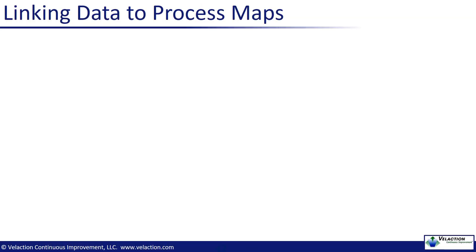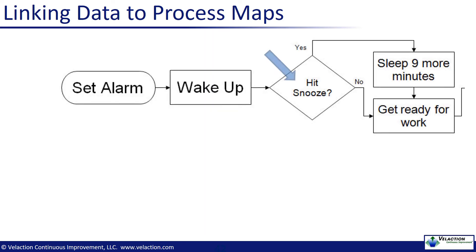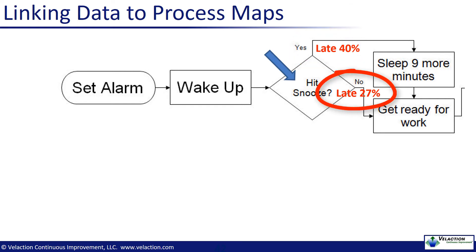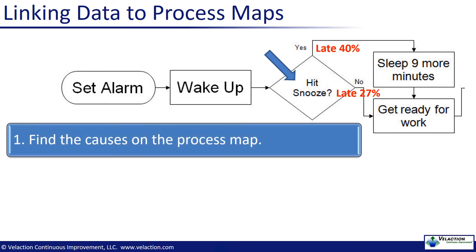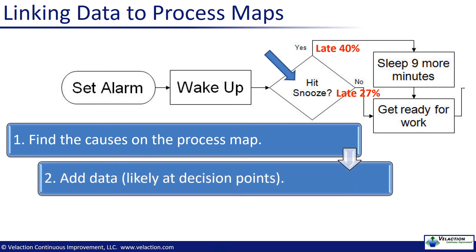As you go through the data, I recommend you keep a copy of your process flow chart handy. You can take the data you have collected and overlay it onto the process map. For example, you can see that when I hit the snooze button, I am late 40% of the time, versus only 27% of the time if I do not hit the button. To do this sort of overlay, identify anomalies in your data and look for the steps on the process map where those causes reside. Write the data onto the map — this will nearly always be at a decision point. If you do not have a clear decision point where the data can go, think about breaking your map up into more granular steps.